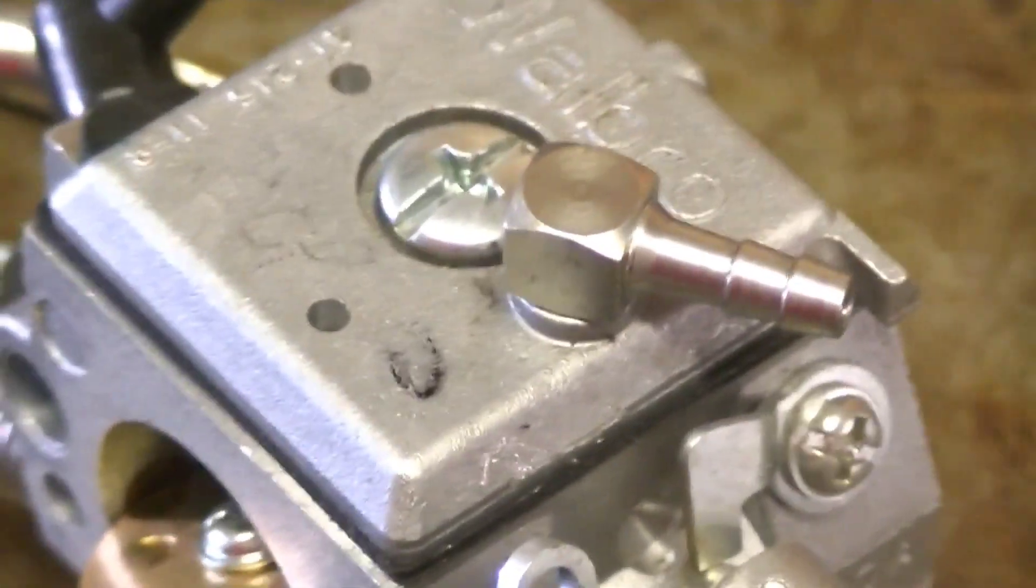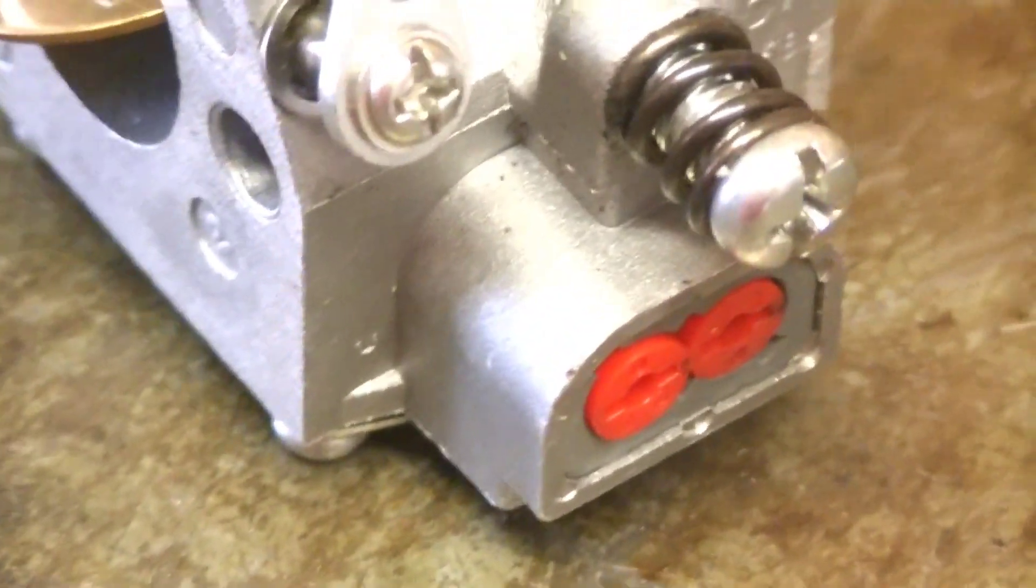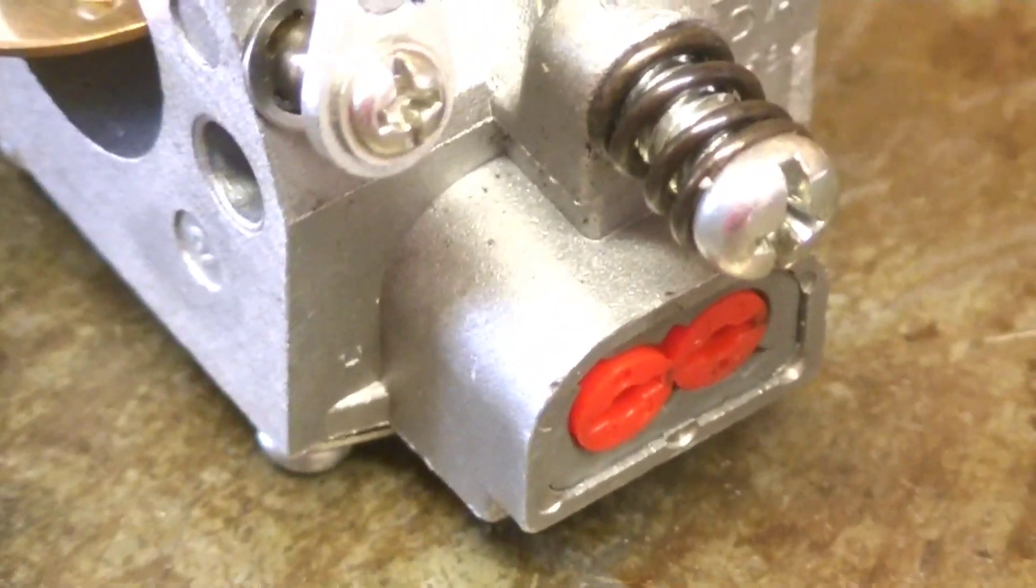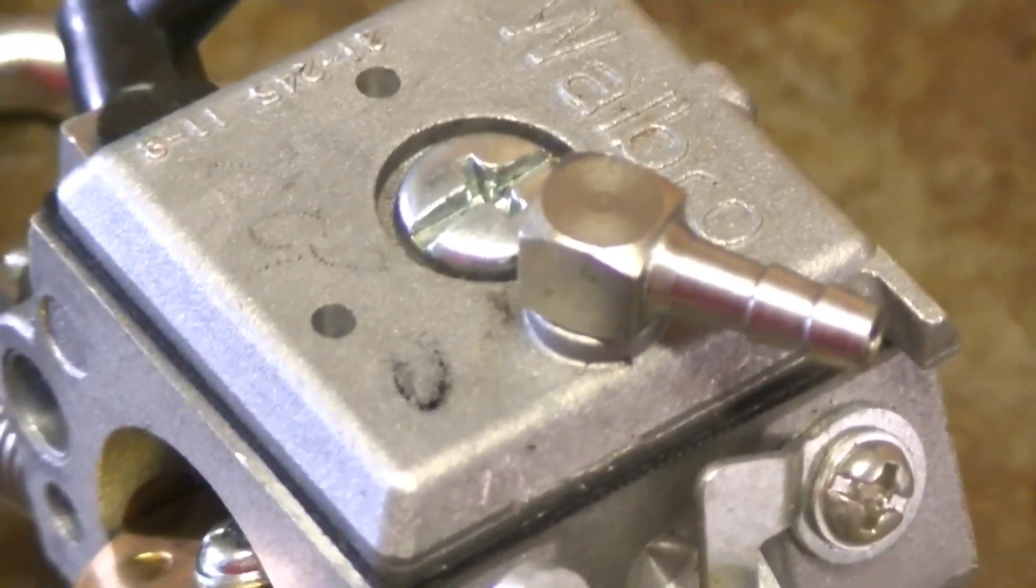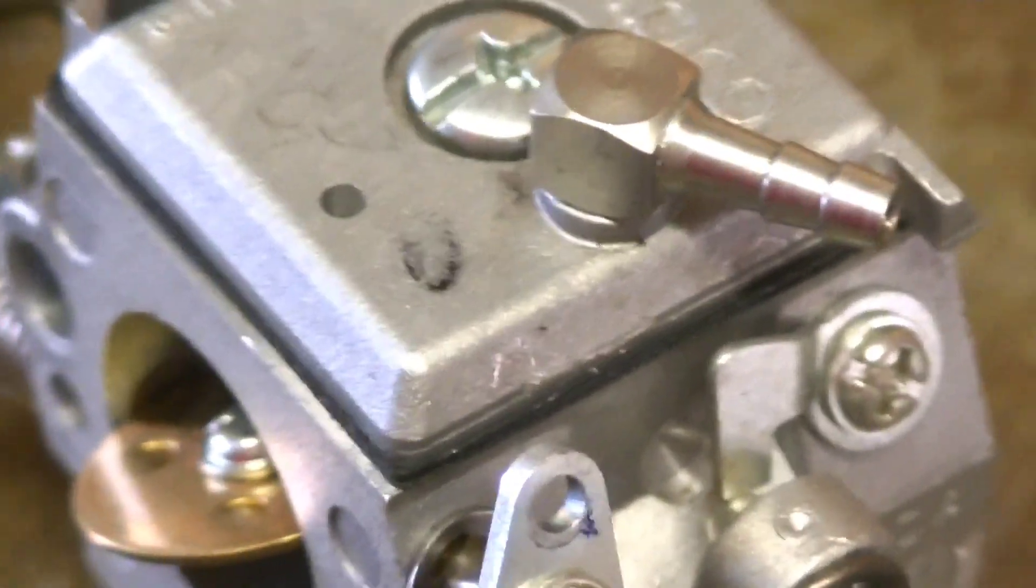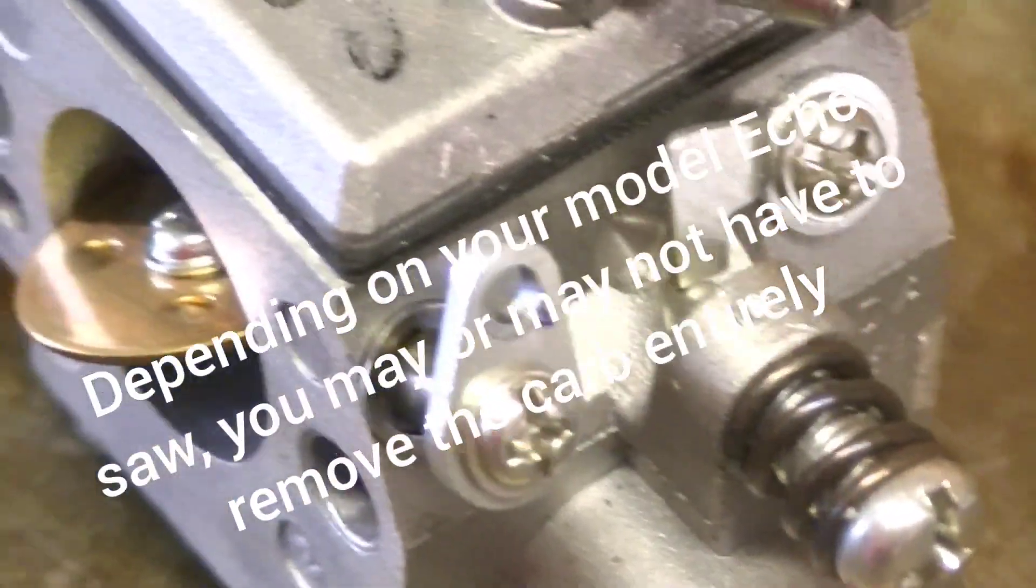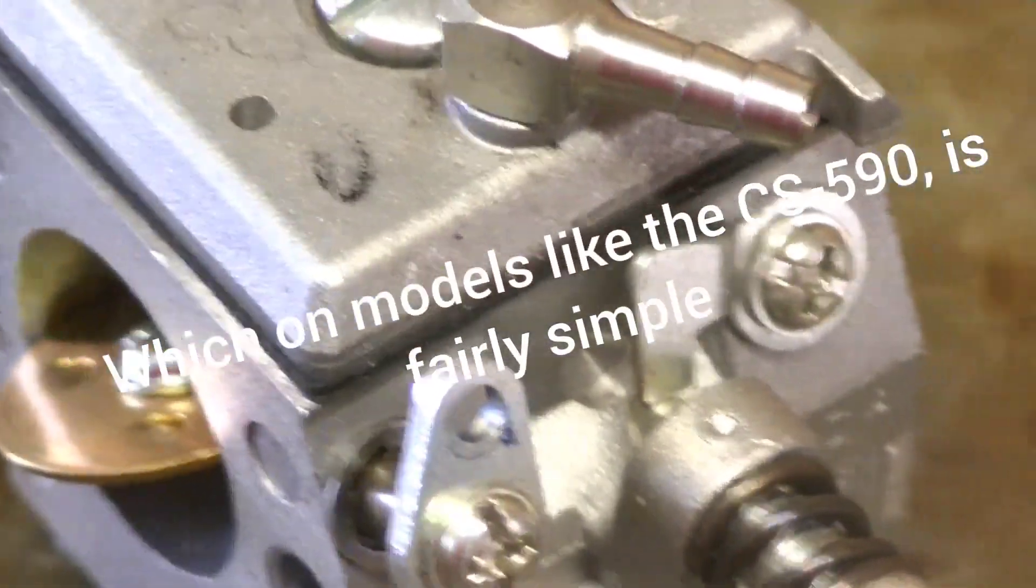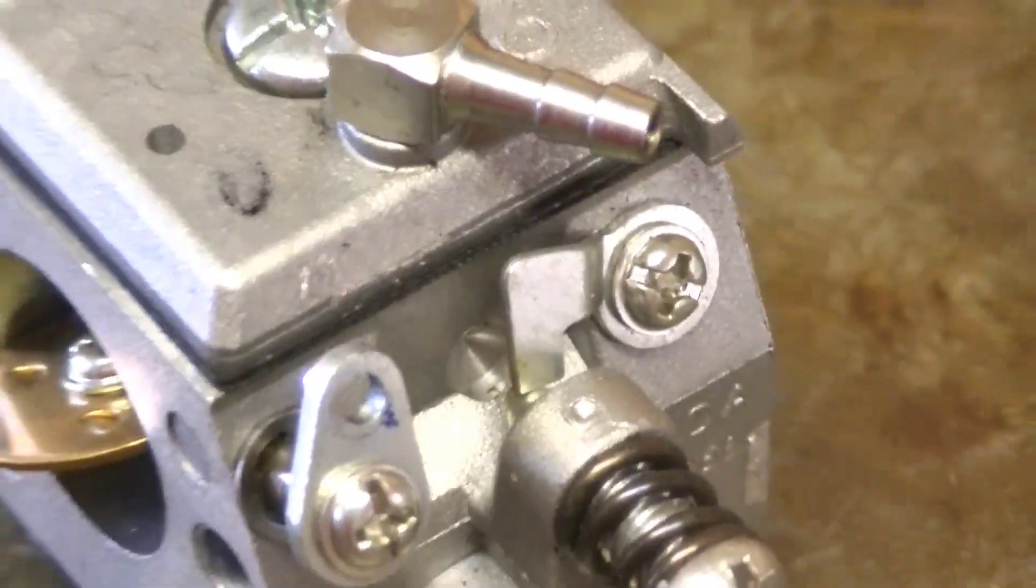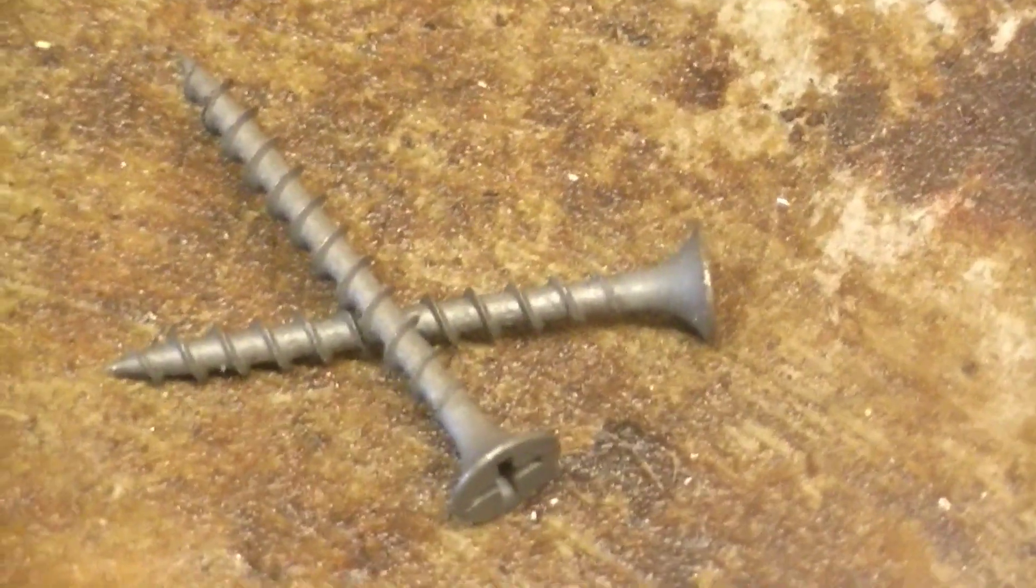So, we got this CS590 carburetor, and I'm going to show you how to remove the limiter caps off of this carburetor for anybody out there who wants to have the saws properly adjusted or somebody who's servicing the carburetor on one of these and the limiters are in the way of a proper carburetor adjustment. It's fairly simple to do, and really all you need are two wood screws and a flathead screwdriver.